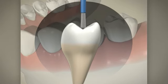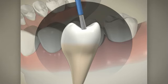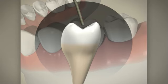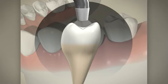A special conditioning solution is applied to the tooth to prepare it for the sealants. Sealants are placed in the pits and fissures of the teeth and cured to create a barrier to food and plaque.